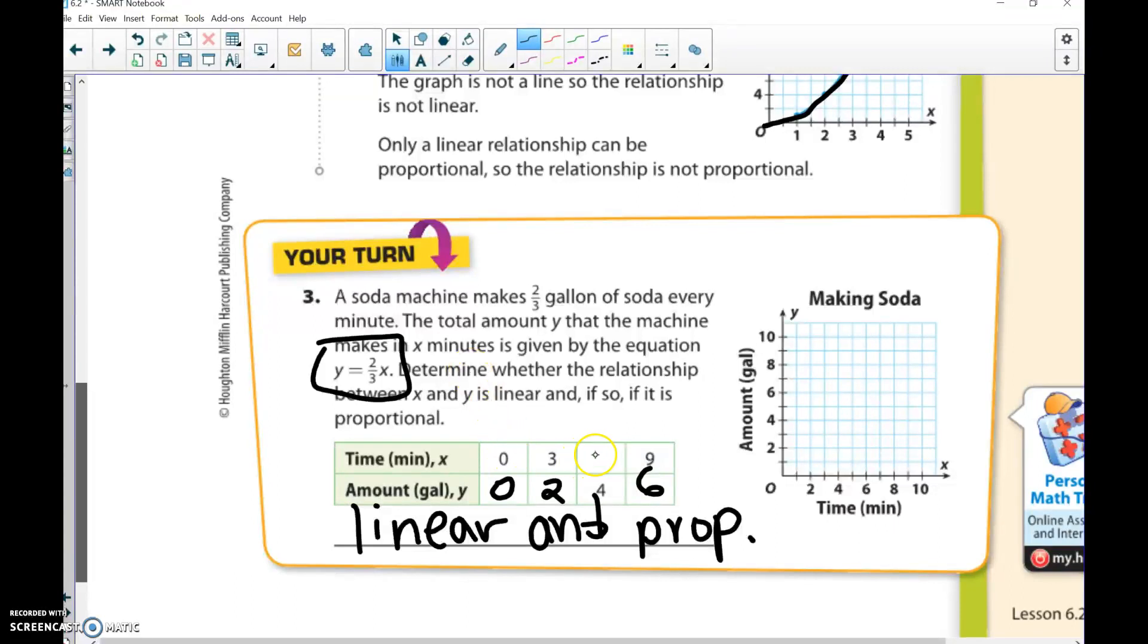This one's a little trickier because it gives me the answer but I need to figure out what that x would be. What number times 2/3 would give me 4? We do the opposite - we divide by 2/3. Four divided by 2/3 would give me 6. So 6 would be how I would complete that table.